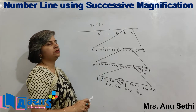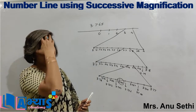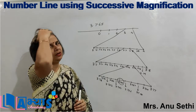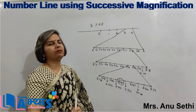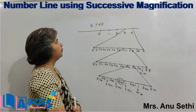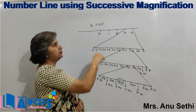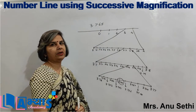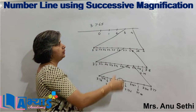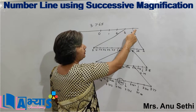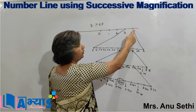Successive magnification means I am magnifying the area in which this number will lie. Because 3.765 is greater than 3 but less than 4, on the number line it was somewhere between 3 and 4.